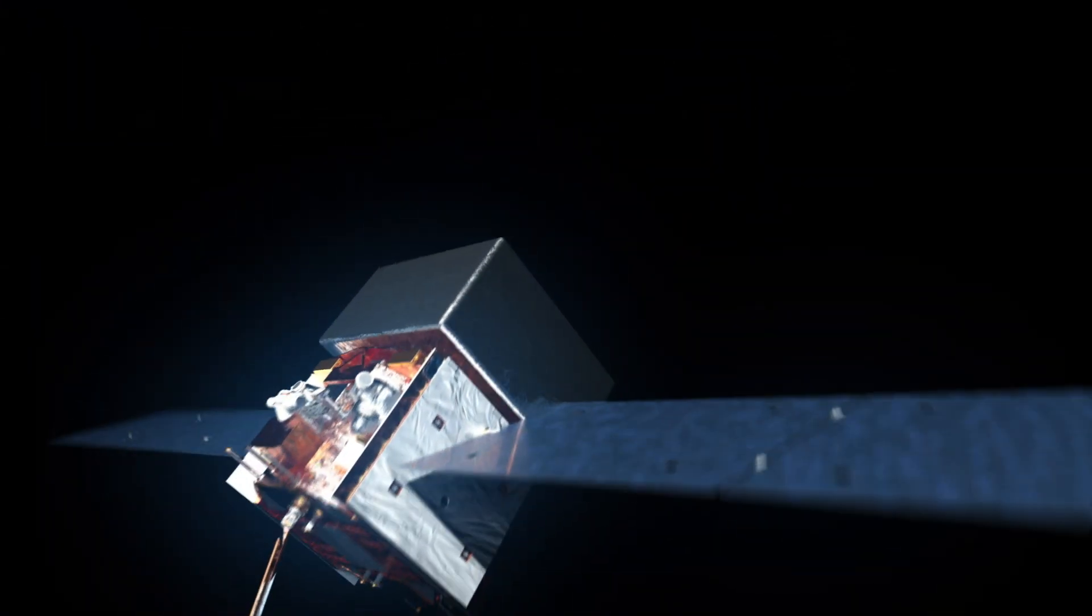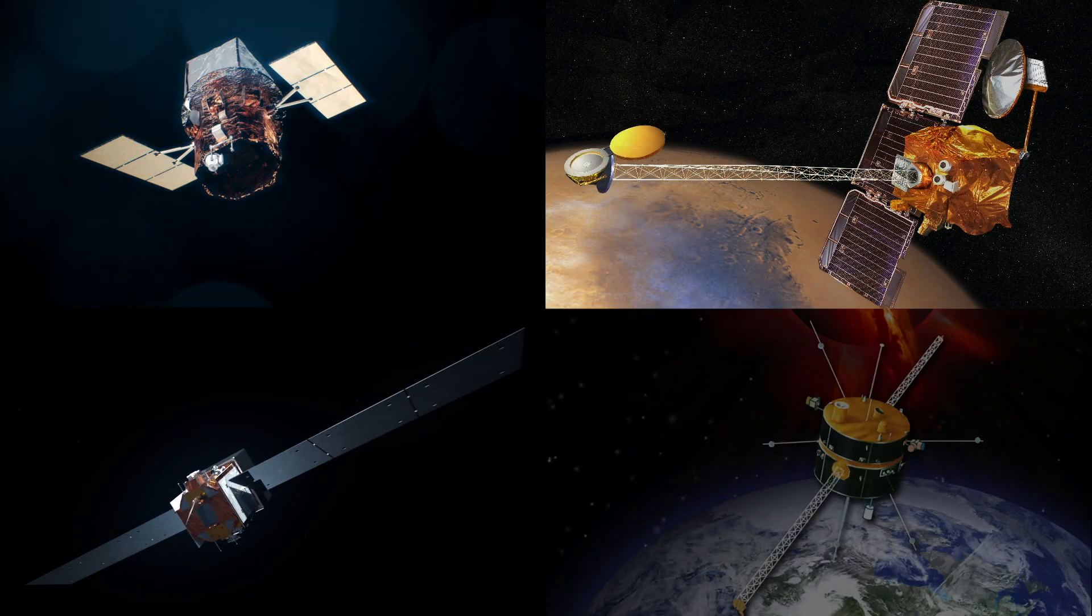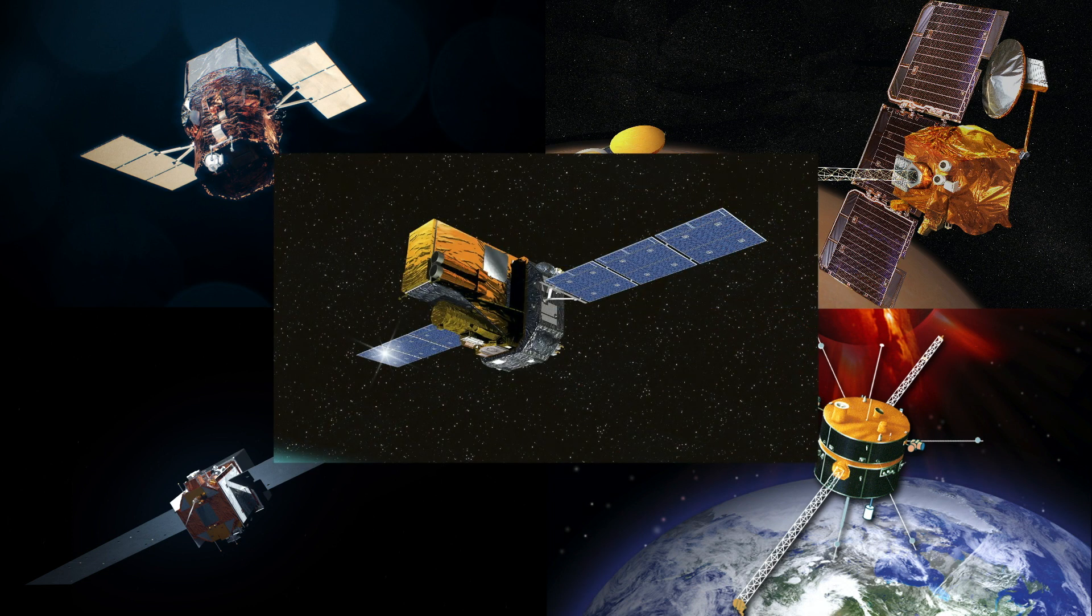On April 15th, detectors on NASA's Fermi, Swift, Mars Odyssey, and Wind missions, as well as on the European Space Agency's Integral satellite, picked up a rapid surge of X-rays and gamma rays.